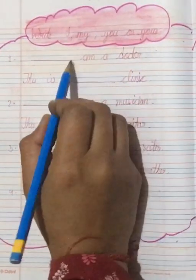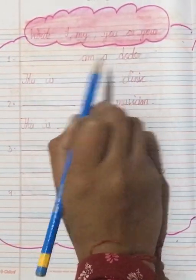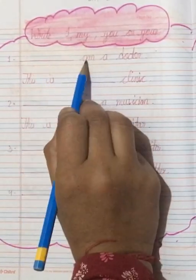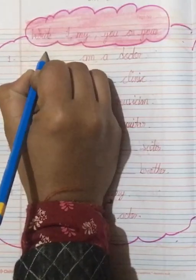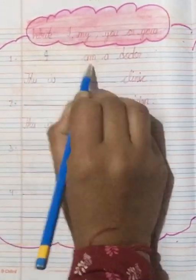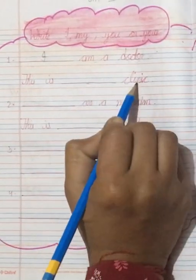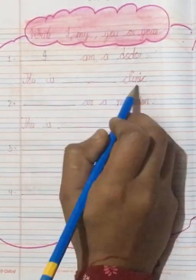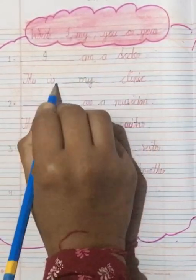So let's start students. First thing is blank. I am a doctor. Dash I am a doctor. Am, I am a doctor. This is dash clinic. Toh kya use karenghe? My. This is my clinic.